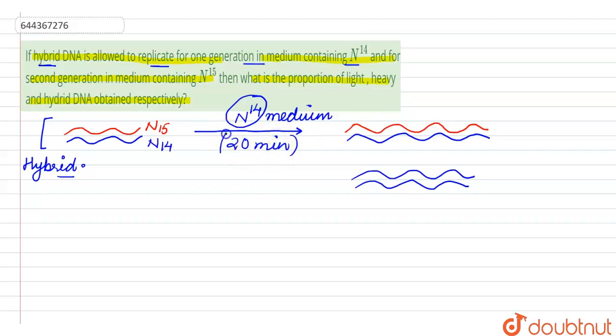Generation time of E. coli is 20 minutes. Now the second thing is that for the second generation in the medium N15, now we'll change the medium and now the medium is N15.